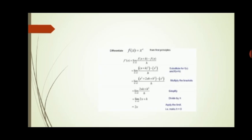Let us recall the method to find the derivative of a function by first principle. The function taken here is x². The definition of first principle states that the derivative f'(x) is defined as the limit as h tends to zero of [f(x + h) − f(x)] / h.